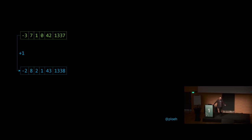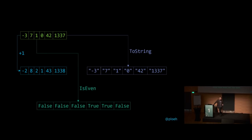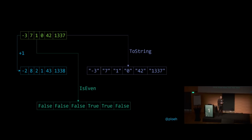A structure-preserving map might be something like adding one to each number, giving you a new collection. You can go numbers to strings, or numbers to boolean values. The structure is preserved — even though boolean values only have two distinct values, the output collection has six elements because the input had six elements and the order is determined by the input. That's what structure-preserving means for collections.